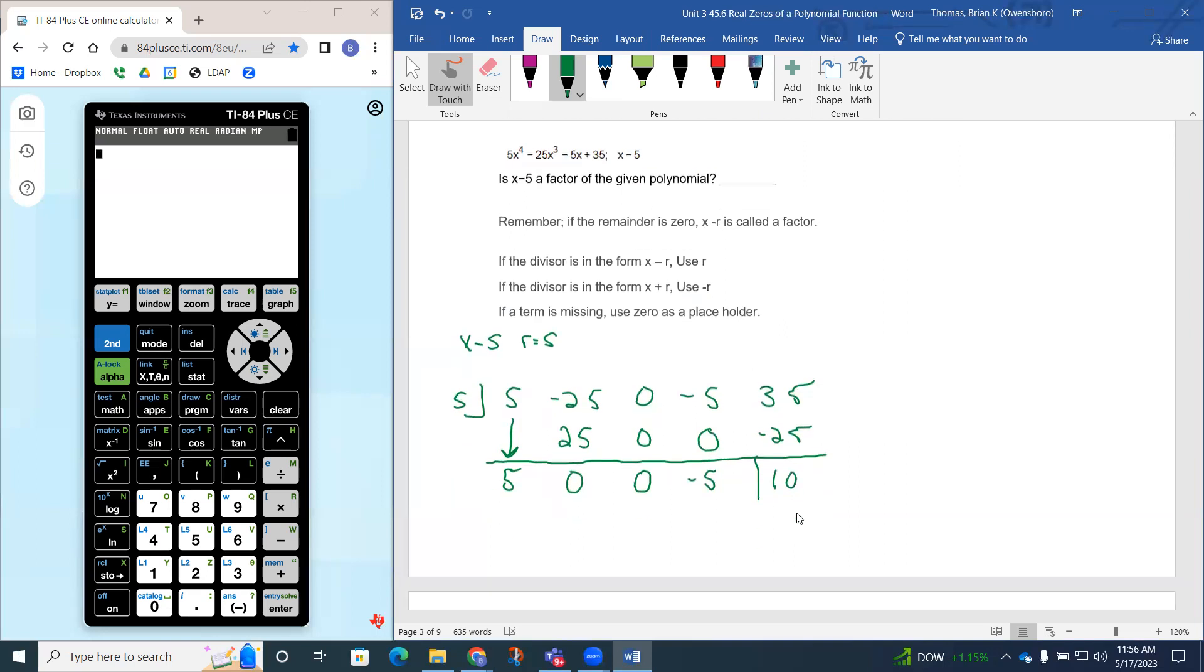Since our degree was 4, this actually represents 5x³ + 0x² + 0x - 5, that would be our quotient with the remainder of 10. But since there's a remainder of 10, that means x minus 5 did not go into it evenly, so x minus 5 is not a factor.